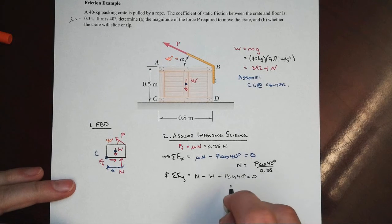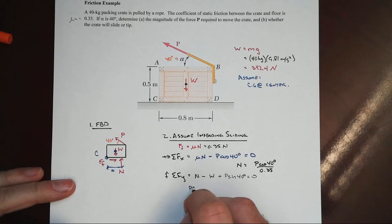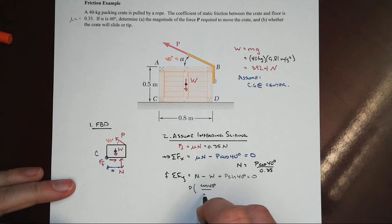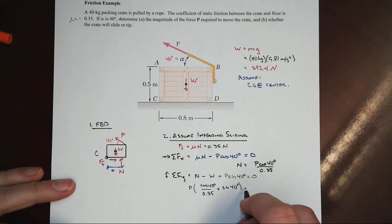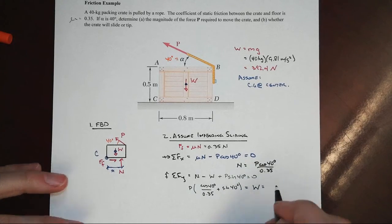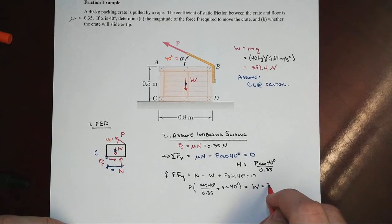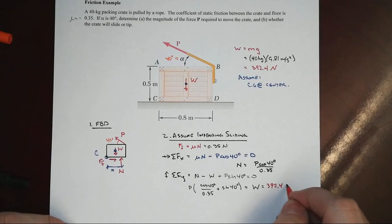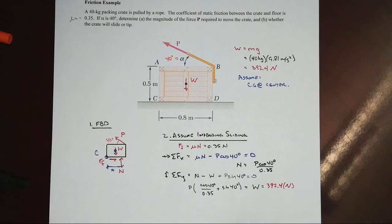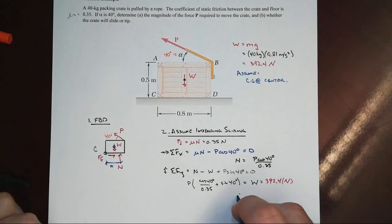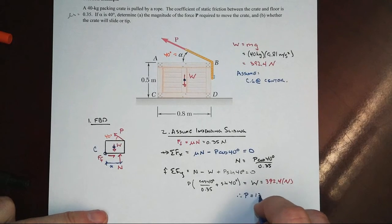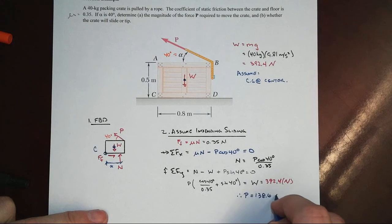That's the normal force, not mutant in this particular case. We would have then the expression that P, after we factor it out, cosine of 40 degrees over our mu value of 0.35 plus sine of 40 degrees would equal our w, which in this case equals 392.4 newtons. Different n there. Again, inconvenient that that's the same symbol as our normal force. From which we would then find that P is equal to 138.6 newtons.